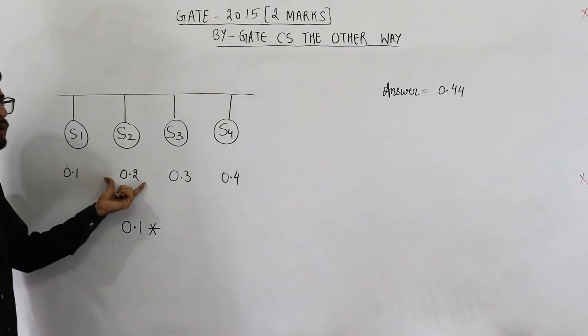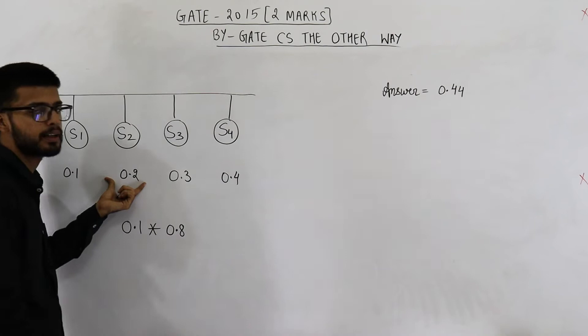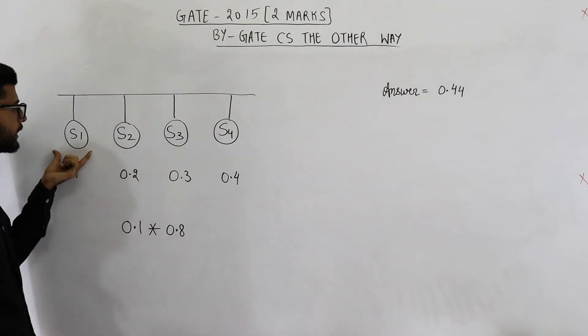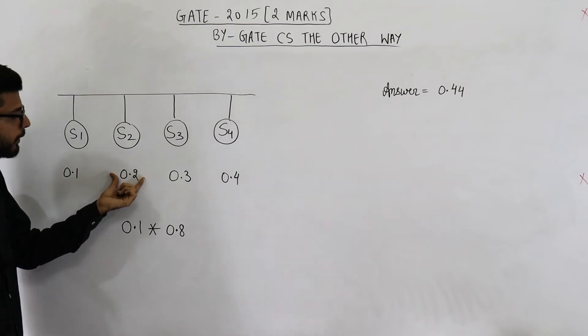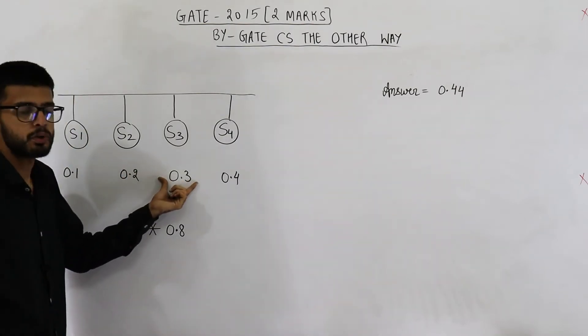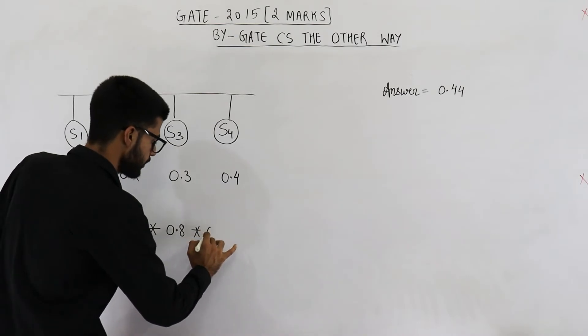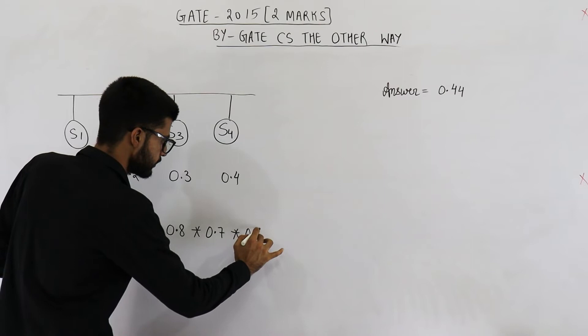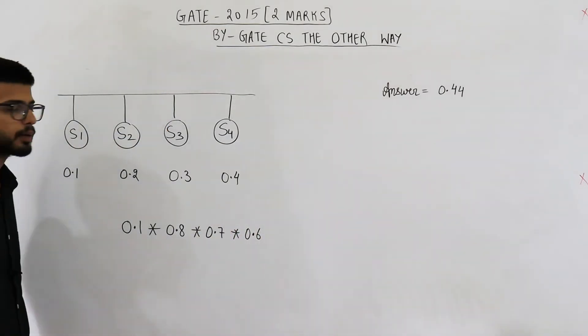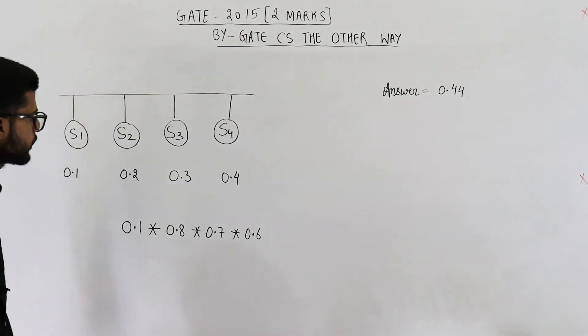Into 0.8 because S2 is not sending data. We want only S1 must send the data. So 1 minus 0.2 into 1 minus 0.3 into 1 minus 0.4. So this will be into 0.7 into 0.6. This is the probability that only S1 is sending data.